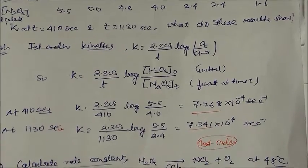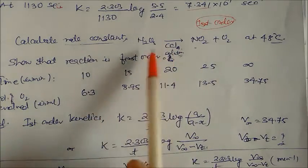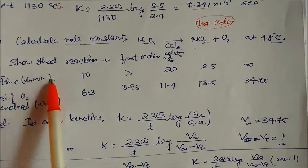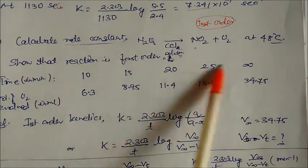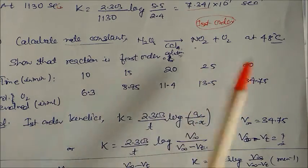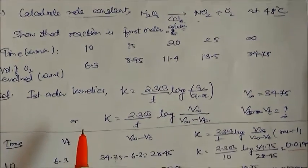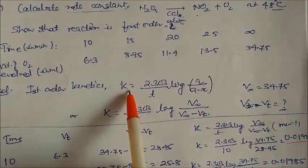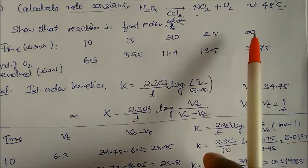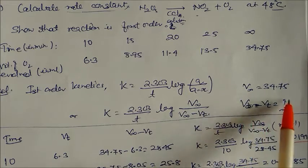Another example: decomposition of N₂O₅ at 48°C. We must prove first order kinetics and calculate k. Time is given in minutes (10, 15, 20, 25, and ∞) and the volume of oxygen evolved is increasing. At t = ∞, all N₂O₅ is converted, giving V∞ = 34.75 mL. The term (V∞ − Vt) gives the remaining concentration at time t.